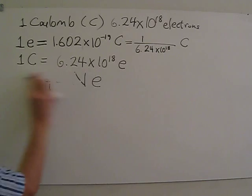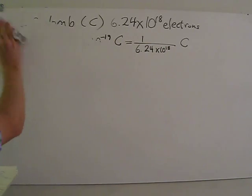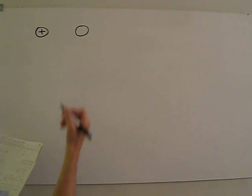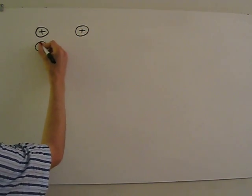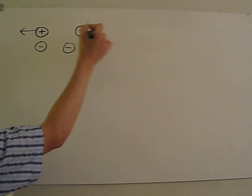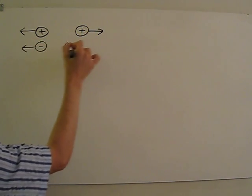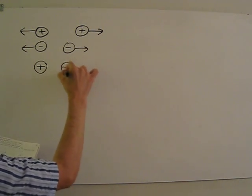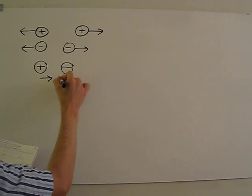We now introduce Coulomb's law, which describes the electric force between two point charges. Coulomb's law states that if we have two like charges, such as two positive charges or two negative charges, then the forces will be repulsive, so they will point away from each other, as shown here. However, if we have two opposite electric charges, the forces will be attractive, as shown here.